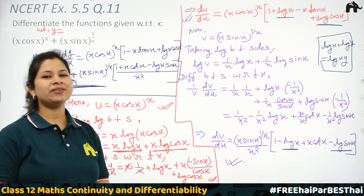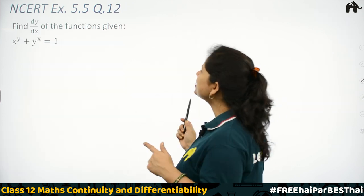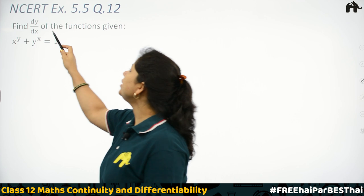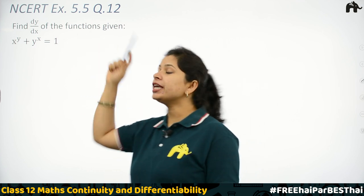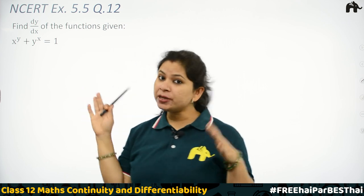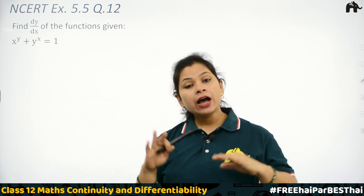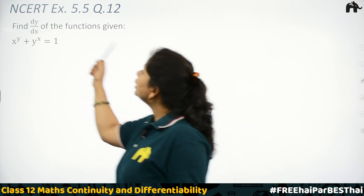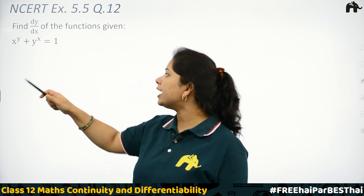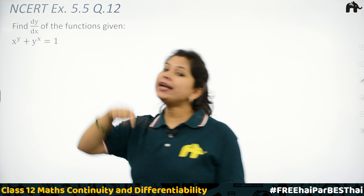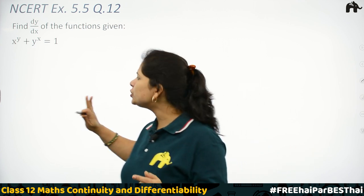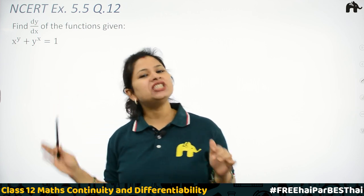Question 12: Find dy/dx of the given function. Here we have an equation — not just an expression — which is x^y + y^x = 1. From here we need to find dy/dx. Since it is in addition form, we assume u = x^y and v = y^x.